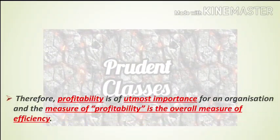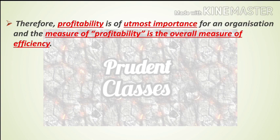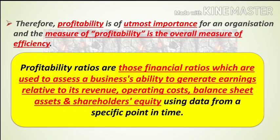Now the next point says: therefore, profitability is of utmost importance for an organization, and the measure of profitability is the overall measure of efficiency. So for any organization, profitability is a very important factor, and through the measures of profitability, you get to know the efficiency of your organization. That is why we need to calculate profitability ratios — through profitability ratios you can see whether your enterprise's activities are profitable or not, and judge the efficiency of your organization. So I'm sure this point is clear. Now let's look at the definition of profitability ratio.